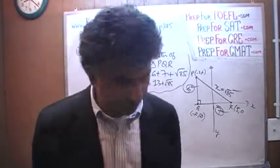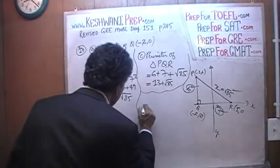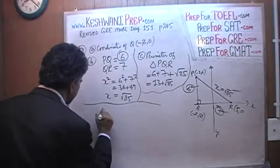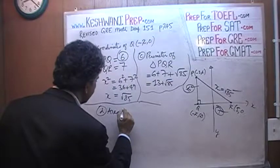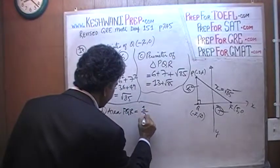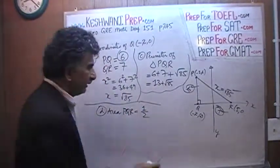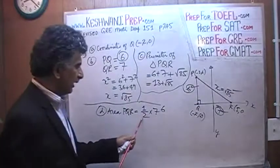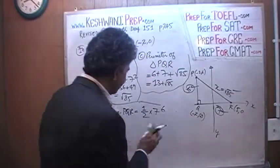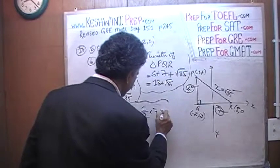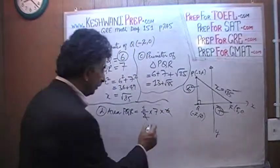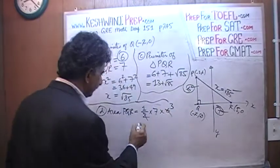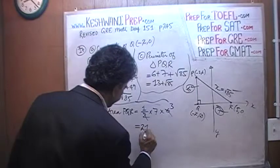In part D, they ask you for the area of PQR, which is one-half base times height. The base is 7, the height is 6. Since we have 2 at the bottom and 6 at the top, just divide top and bottom by 2. So the 6 becomes 3, and 7 times 3 is 21.